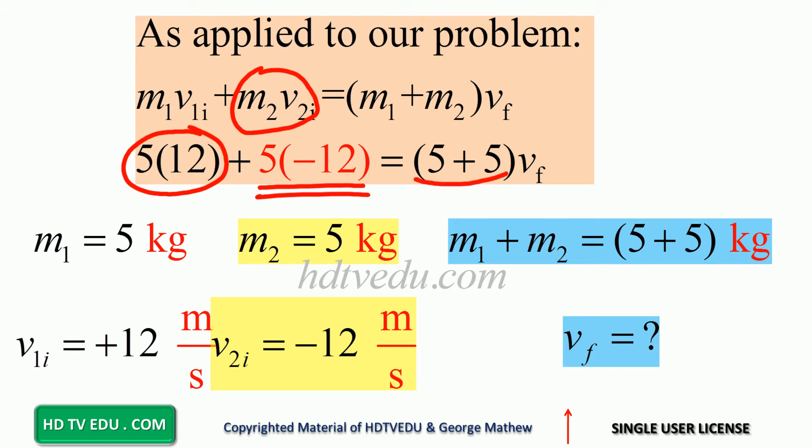What is the total mass after collision? 5 plus 5. And then they move with speed v final.